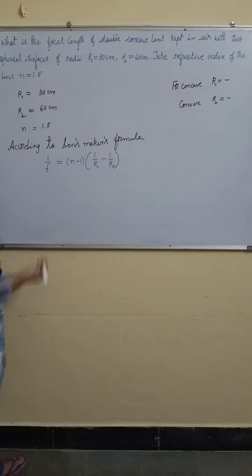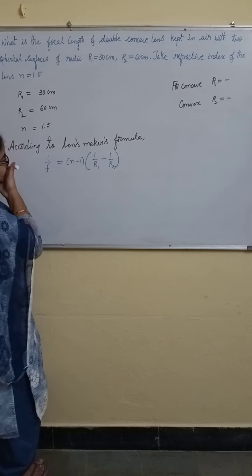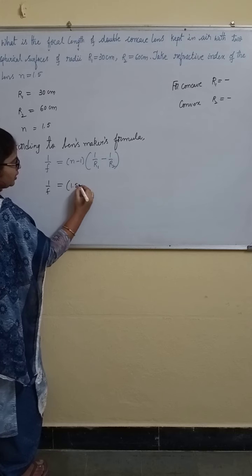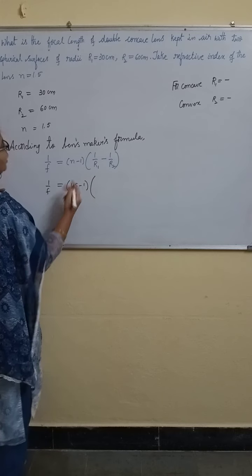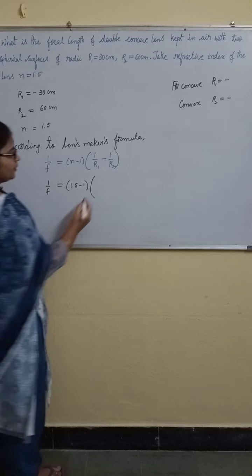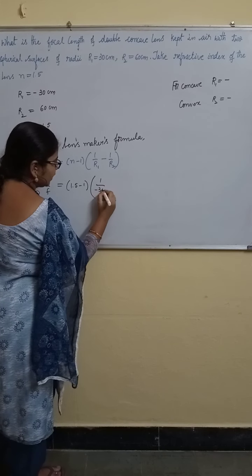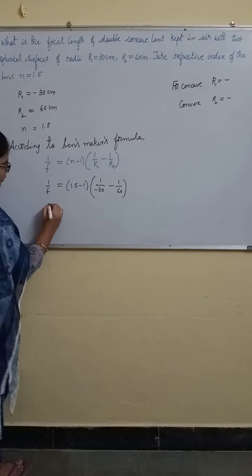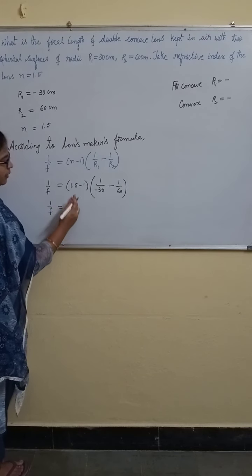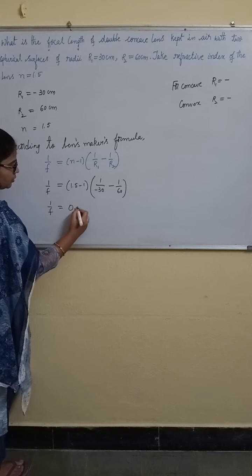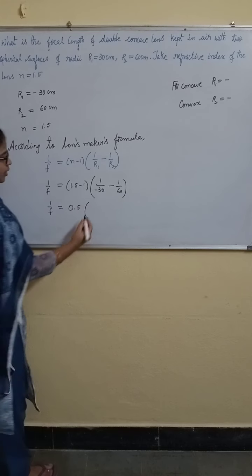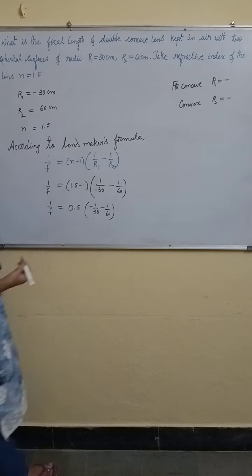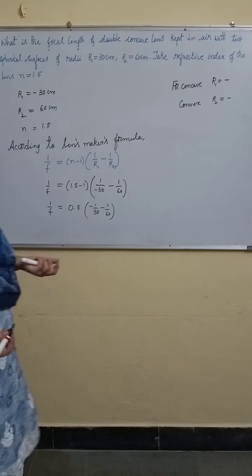So, here 1 by F is equal to n value how much? 1.5 minus 1 into R1 value minus, right? 1 by minus 30 minus 1 by 60. Now, 1 by F is equal to 1 by 30 minus 1 by 60. What is the LCM for 30 and 60? Obviously, it is 60.